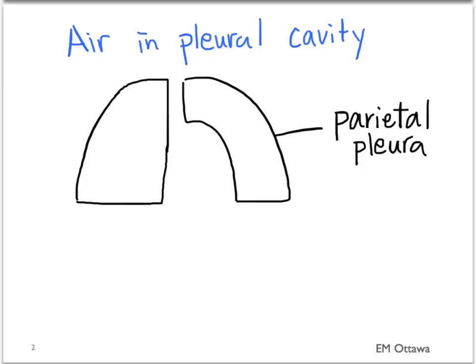Pneumothorax is defined as air in the pleural cavity. That is the potential space between the parietal pleura and the visceral pleura.